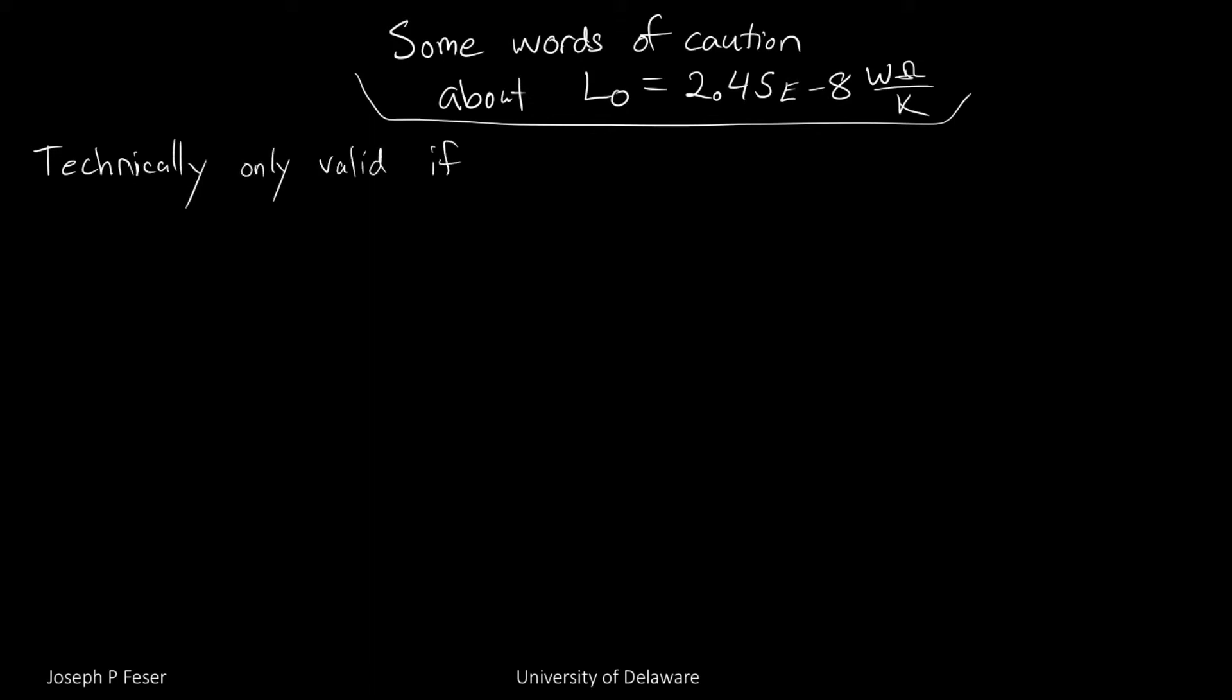I would just like to make sure that we're completely clear about the fact that that number was only technically valid under a couple of assumptions. One was that we had to have isotropic degenerate materials, i.e. a pure metal with sort of free electron type behavior.